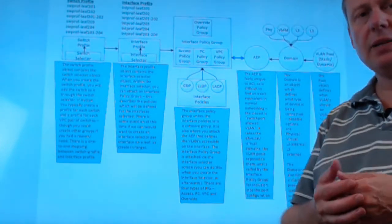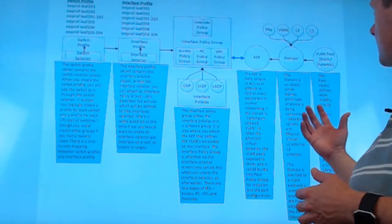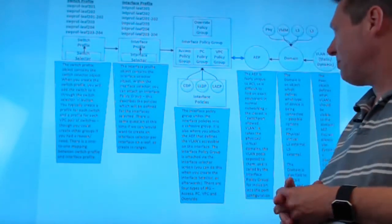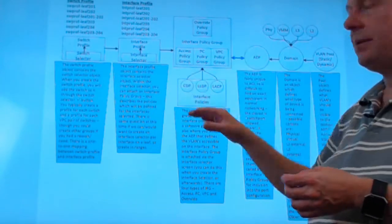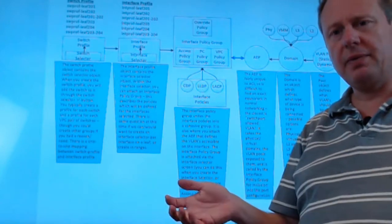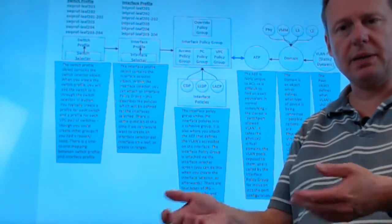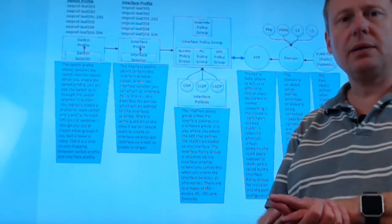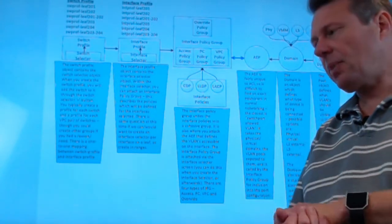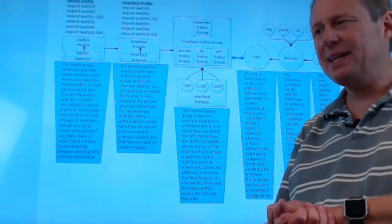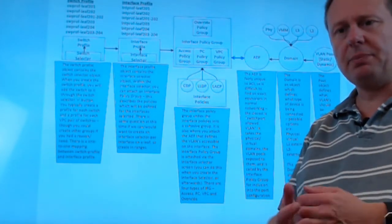Now, if you're used to using NXOS and you're looking at this, you're already daunted, and I don't blame you. So was I. Because this is a lot, right? I'm used to just going in, creating my VPC domain, going into my interfaces, adding them to the port channel, going into the port channel, tying it to the domain. And we're done. Well, it's a little bit different in ACI. Everything's a little bit different in ACI. And interface configuration is up there.